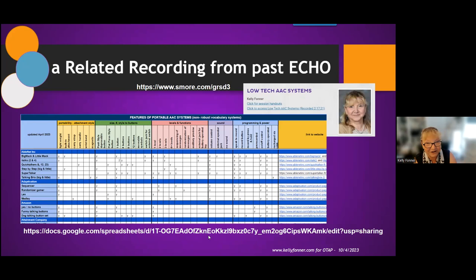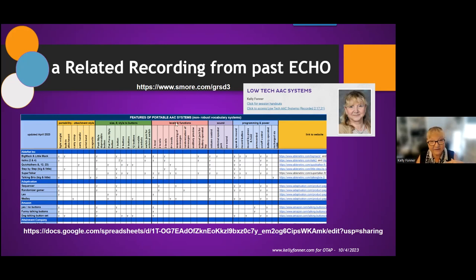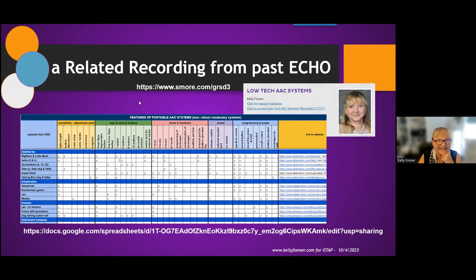Here's a reminder of the link to the low-tech feature match list. The vendors helped fill it out. It focuses on portability, button size, number of levels, sound type, programming, and power controls — fewer categories than a dynamic display system, but it's another useful example with a link to the Echo presentation where it was introduced.